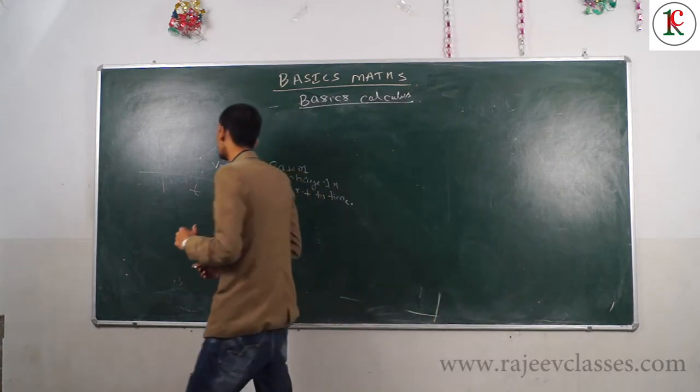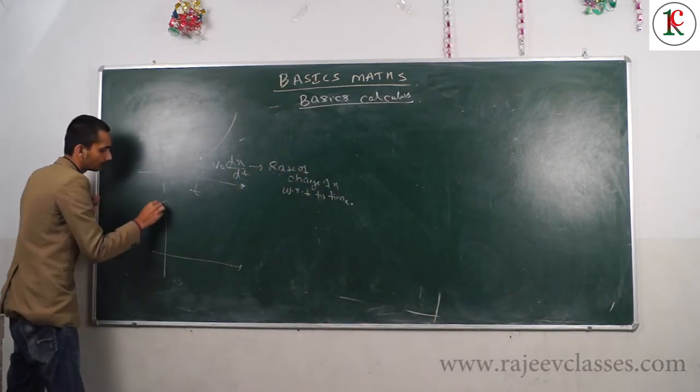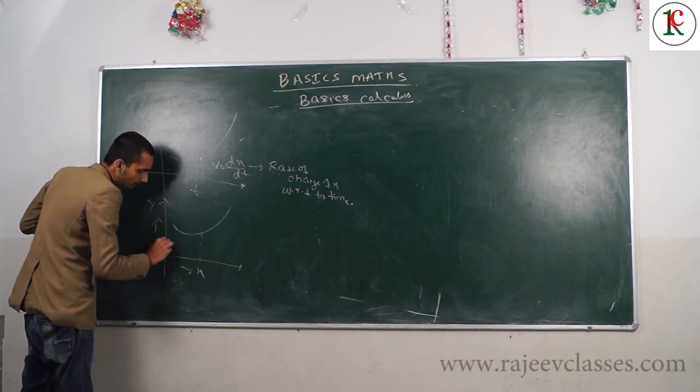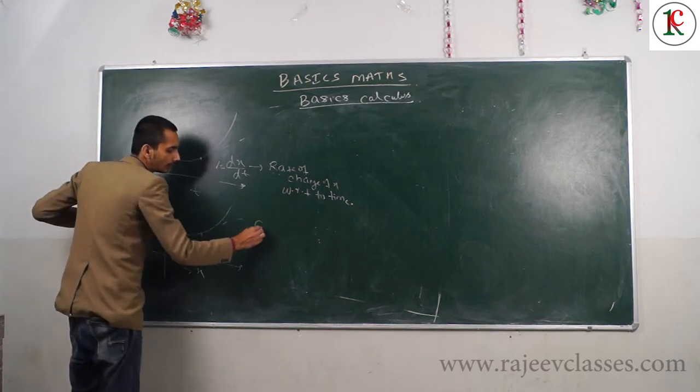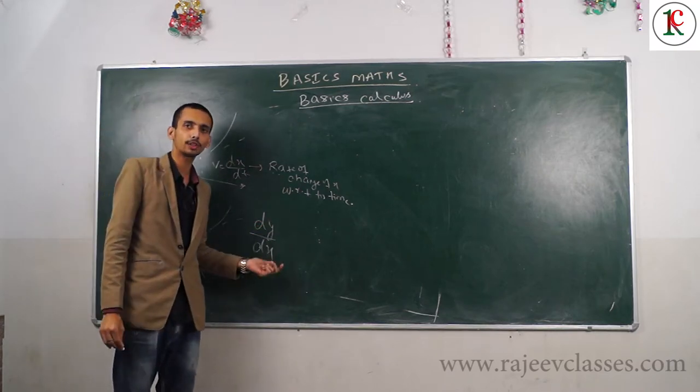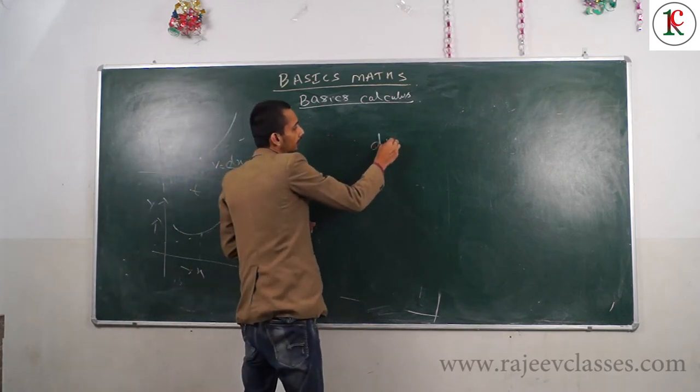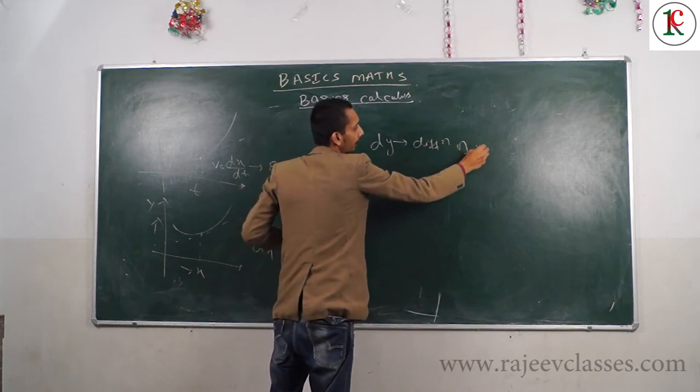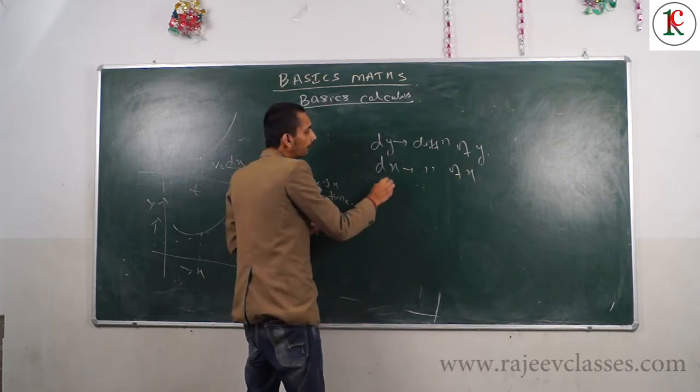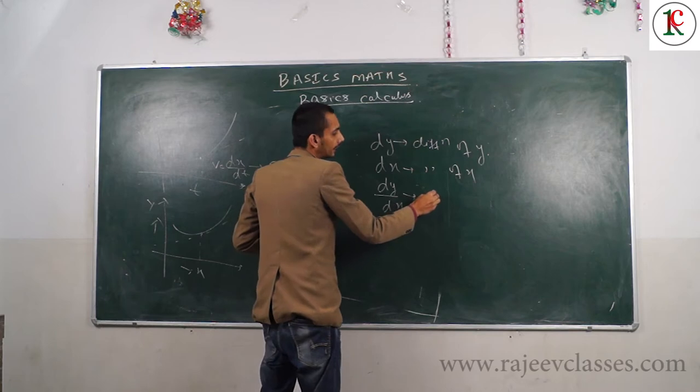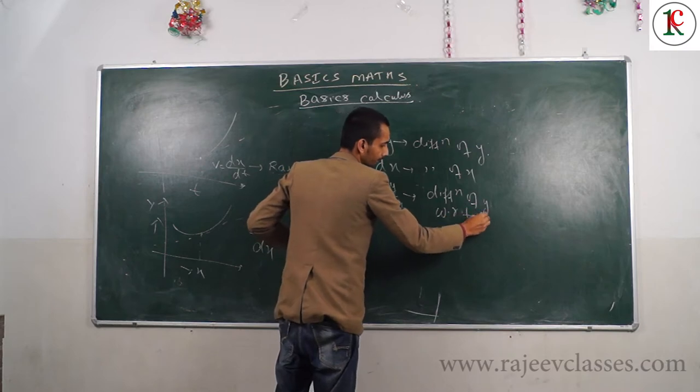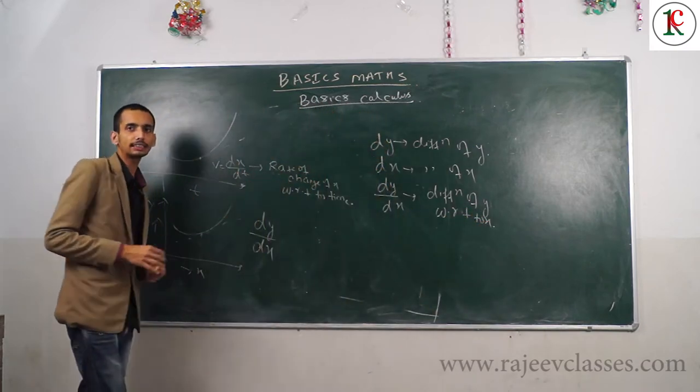For example, if you have a curve Y versus X, at any point the slope gives you DY/DX - the rate of change of Y with respect to X. DY is the differentiation of Y, DX is the differentiation of X, so DY by DX is the differentiation of Y with respect to X.